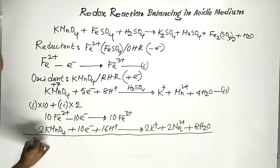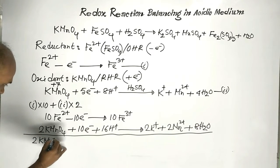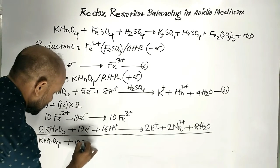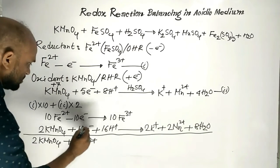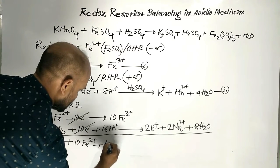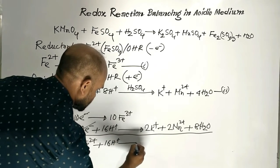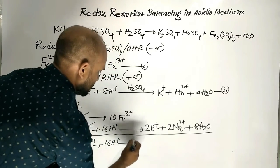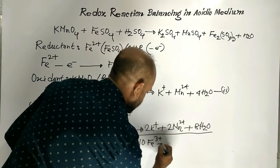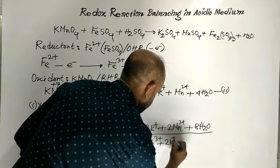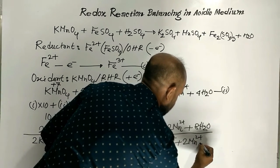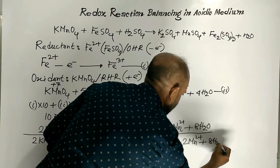Then we get: 2 Potassium permanganate plus 10 Ferrous Ions. The electrons cancel out. Plus 16 protons; on the right side, 10 Ferric Ions plus 2 Potassium ions, 2 Manganese 2+ ions, and 8 molecules of water.